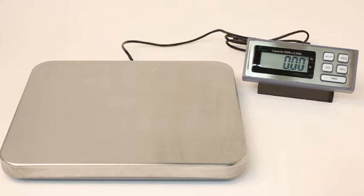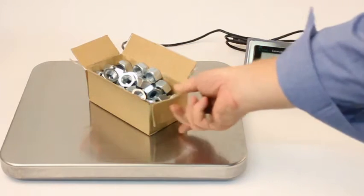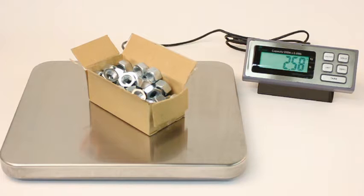The LSS large shipping scale comes in two versions: 200 by 0.05 pounds or 400 by 0.1 pounds, or in kilograms, 100 kilograms by 0.02 kilograms or 200 kilograms by 0.05 kilograms.